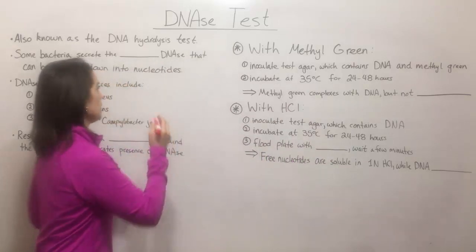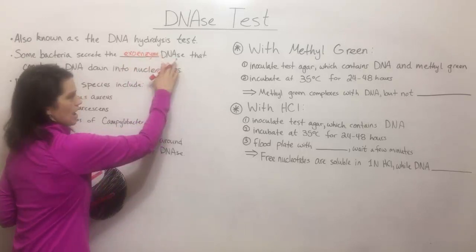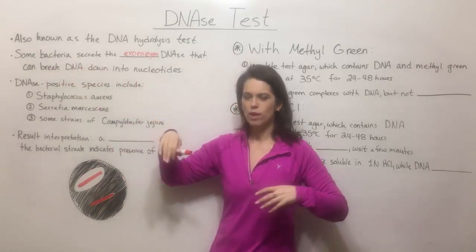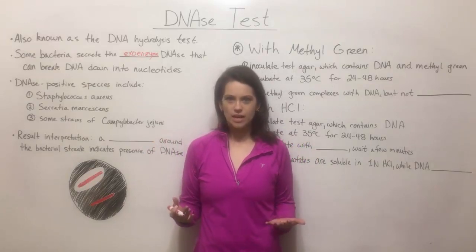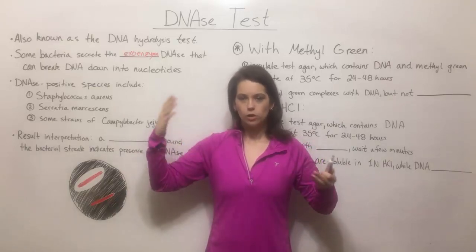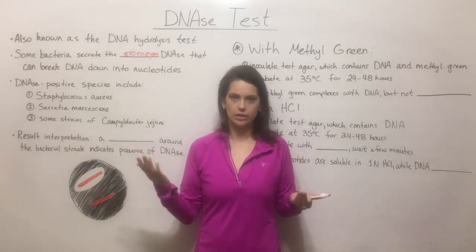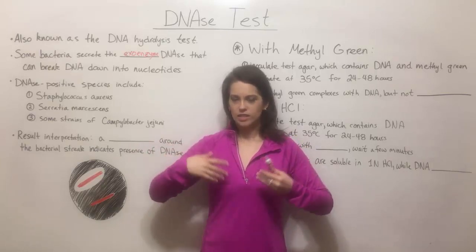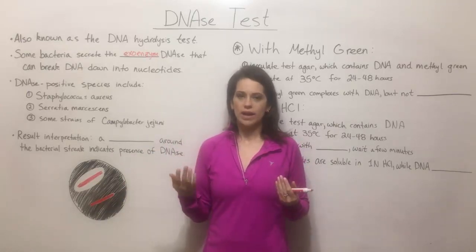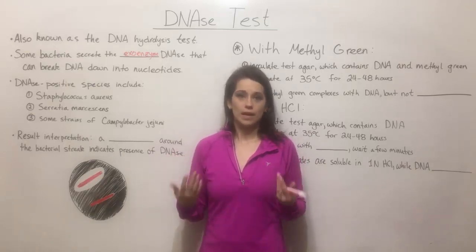Some bacteria secrete an exoenzyme known as DNase, and this breaks DNA down into nucleotides. You might ask why bacteria want to break down DNA — it's not their own DNA they want to break down. Sometimes there will be DNA floating around outside the cell, usually from another recently killed bacterial cell. The bacterial cell dies, all of its DNA spills out into the environment, and other bacteria may want to break that DNA down to use the nucleotides — those building blocks that make up DNA — to replicate their own DNA.